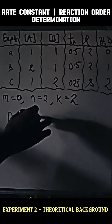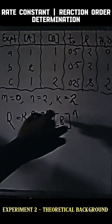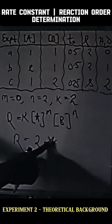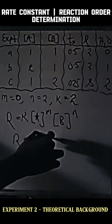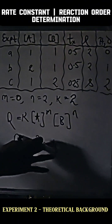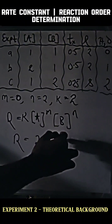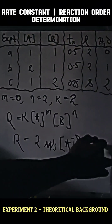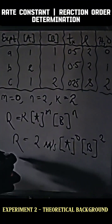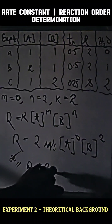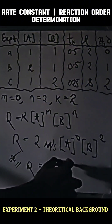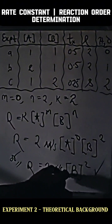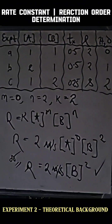Finally, we can write the complete rate law. With k = 2, m = 0, and n = 2, the rate law is: R = 2[A]^0[B]^2. Since anything raised to the power of zero equals one, [A]^0 eliminates, and the final rate law simplifies to R = 2[B]^2. This is the general rate law for this particular set of experimental observations.